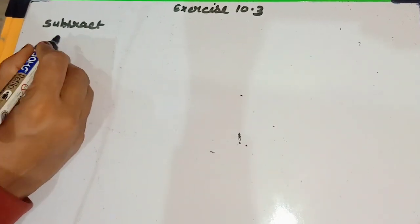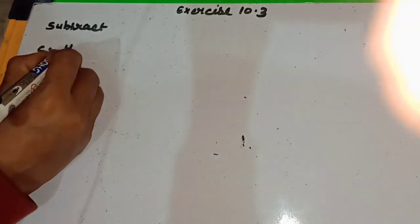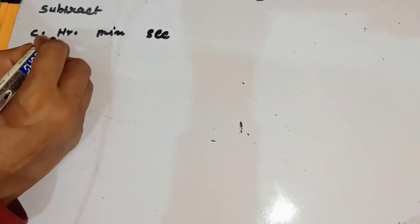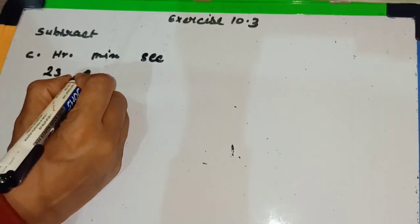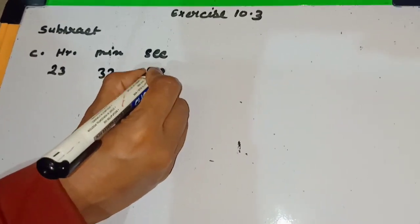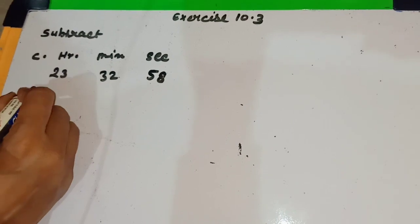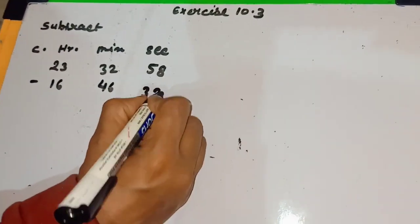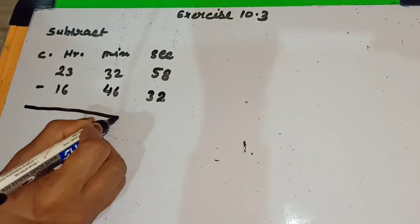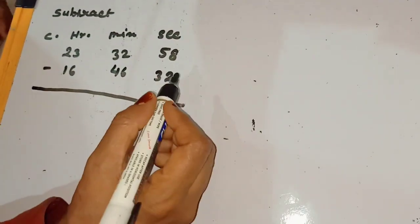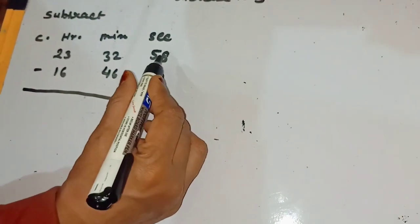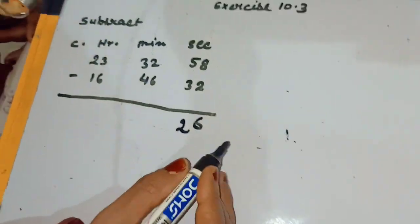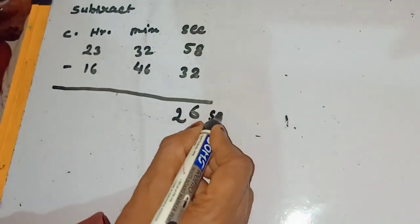So I am doing one question of this type. First arrange the sum: hour, minute and second. Write 23 hours 32 minutes 58 seconds, subtract 16 hours 46 minutes 32 seconds. Children, look carefully. We subtract 32 from 58: 8 minus 2 is 6 and 5 minus 3 is 2, so it is 26 seconds.